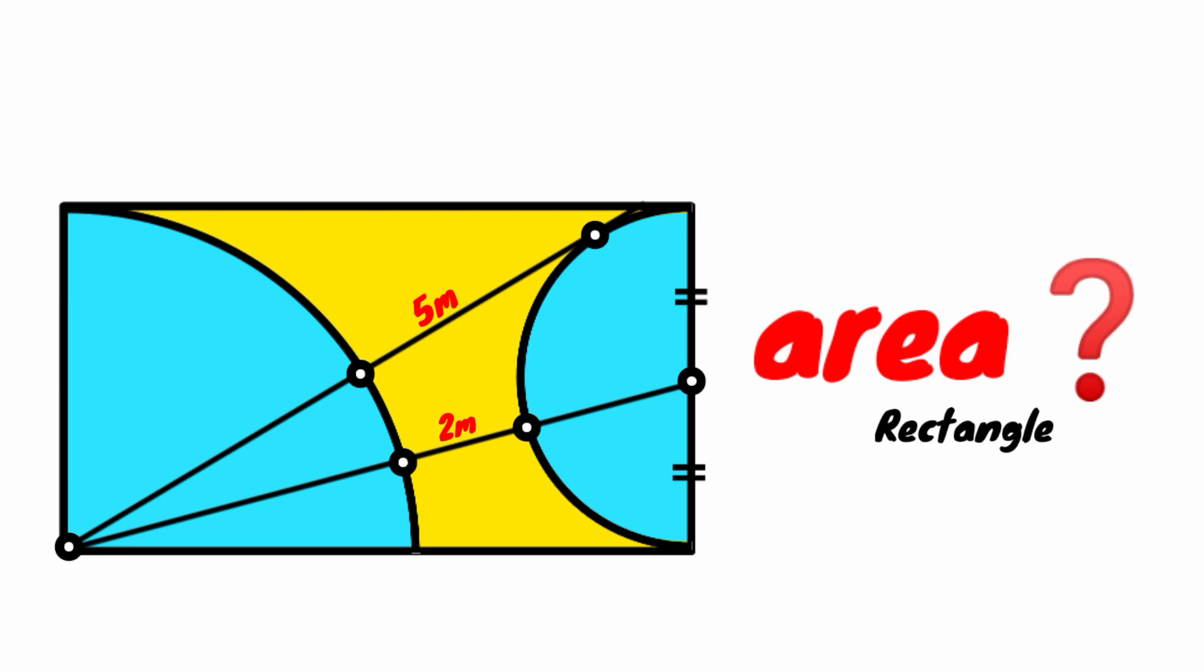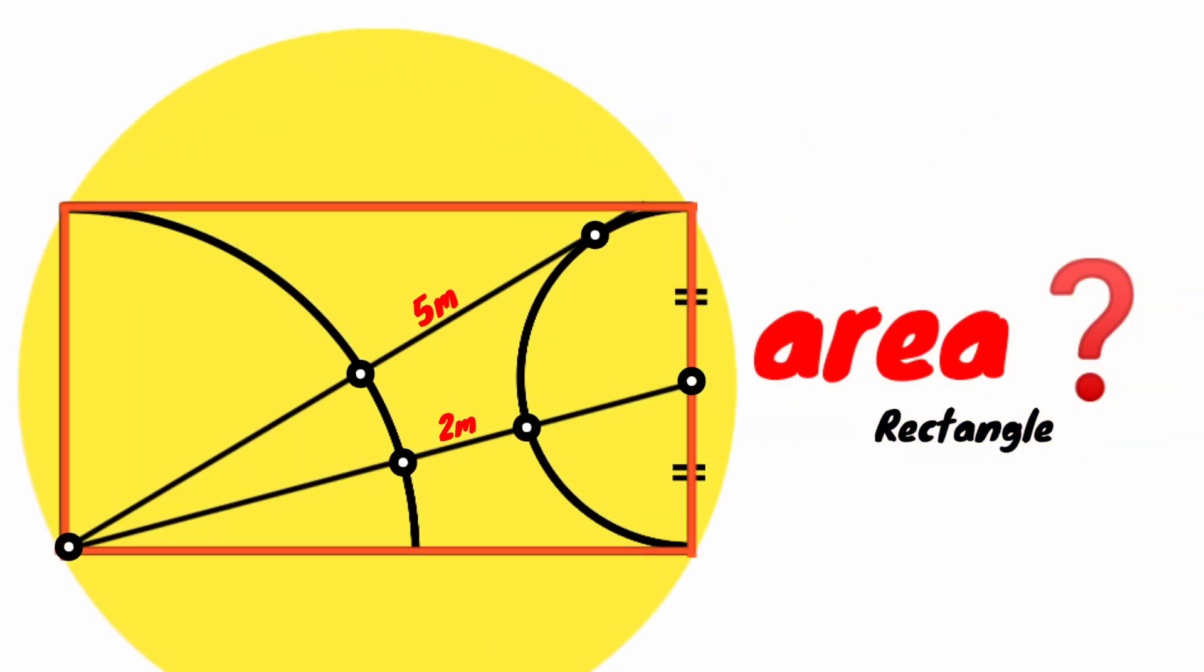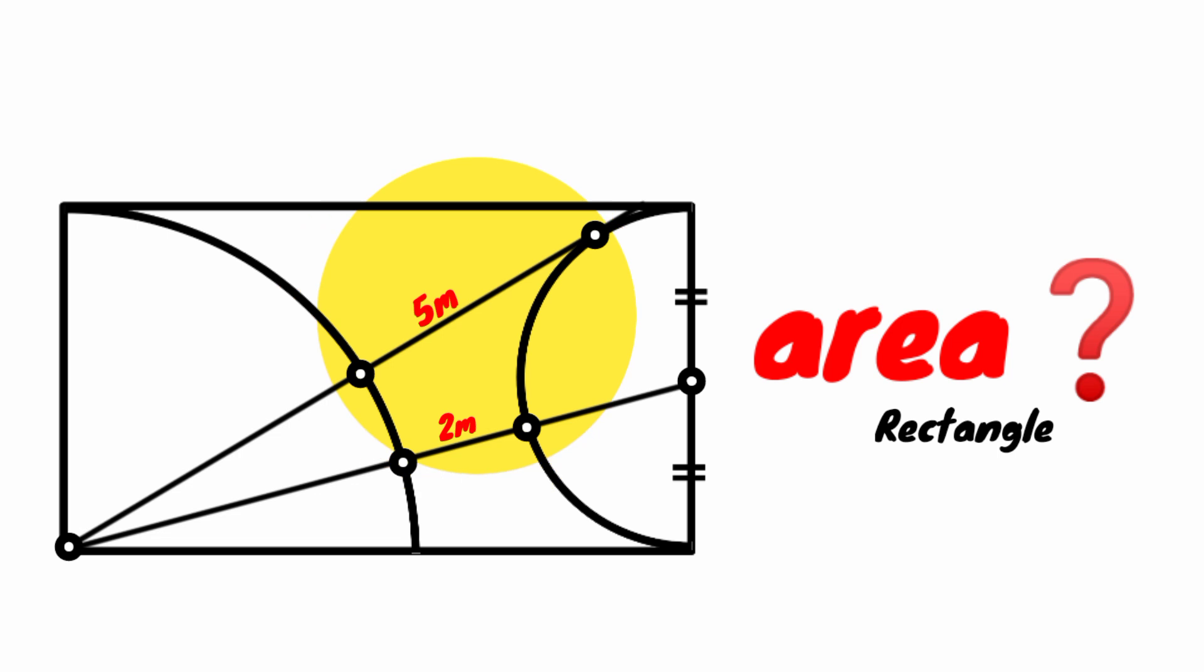Hi everyone, you are welcome back to another interesting question. We are to determine the area of this rectangle. We have the length of this line segment to be 5 meters, and that of this is 2 meters. Here, this segment and this are congruent. This is a semicircle and this is a quadrant. So how can we solve this? How can we calculate the area of this rectangle?